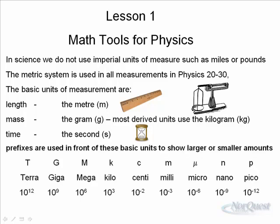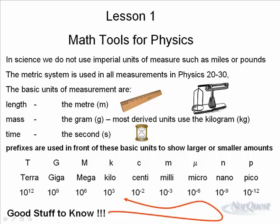We use prefixes in front of these basic units to show larger or smaller amounts. In computers you're probably familiar with kilobytes, megabytes, gigabytes and even now terabytes. With the very small we have centi, a centimeter is small. A millimeter is very small, a milligram is very small. Micro and nano are very incredibly small as you can see, 10^-6, 10^-9. That means one divided by a million or one divided by a billion. Pico would be used to measure the size of an atom.